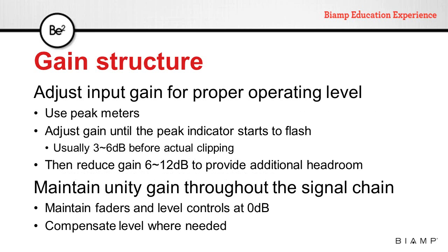When setting our gain structure, start by adjusting the input gain for proper operating level. The best way is using peak meters at the input — adjust the gain until the peak indicator starts to flash, which typically happens 3 to 6 dB before actual clipping depending on the system. Then reduce that gain by 6 to 12 dB to provide additional headroom. Throughout the system, maintain unity gain by keeping faders and mixers at 0 dB and compensating level where needed.